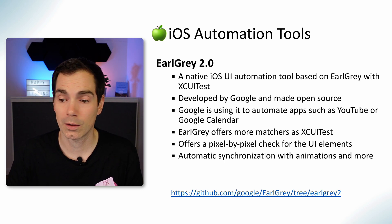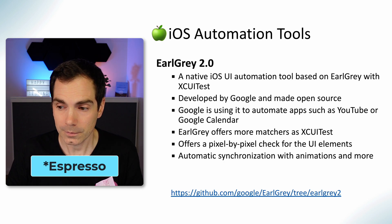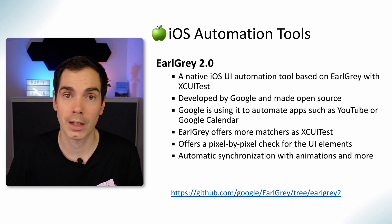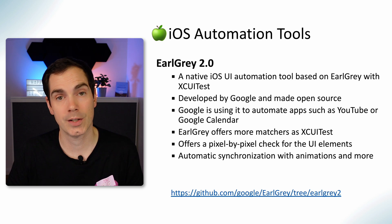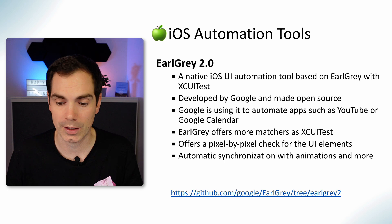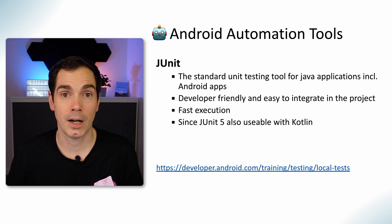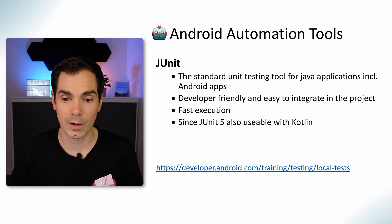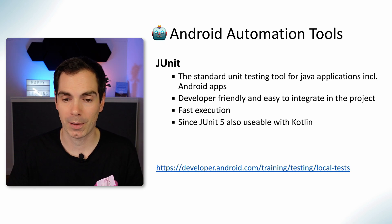Earl Grey is a native iOS UI automation tool based on XCUITest, developed by Google — and Earl Grey is also available for Android. Google uses it to automate apps like Google Calendar and YouTube. Earl Grey offers more matchers than XCUITest alone, extending the base functionality of XCUITest. That covers the purely iOS-focused test automation frameworks.